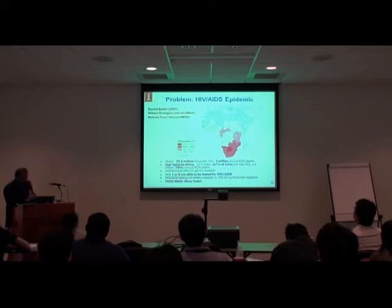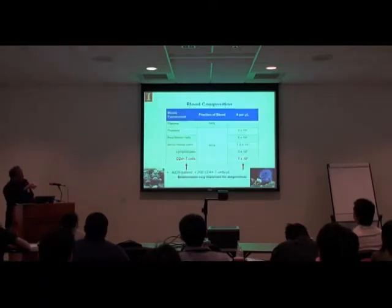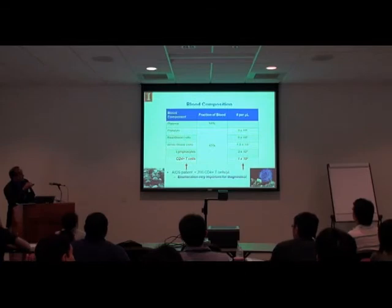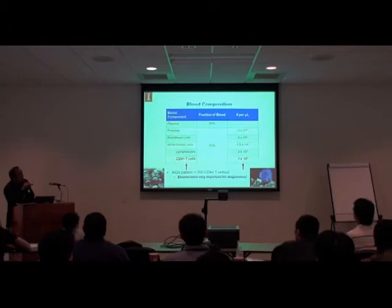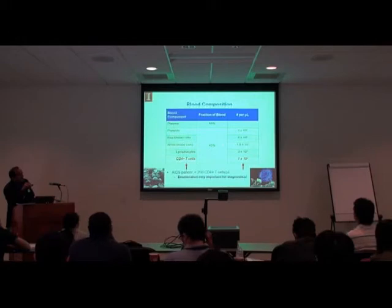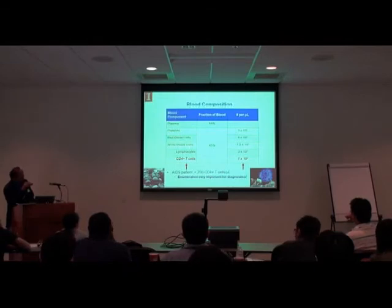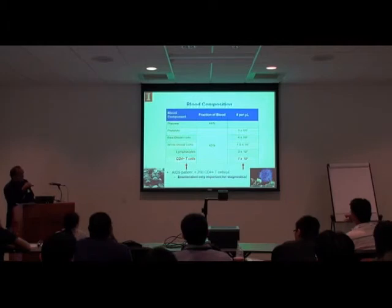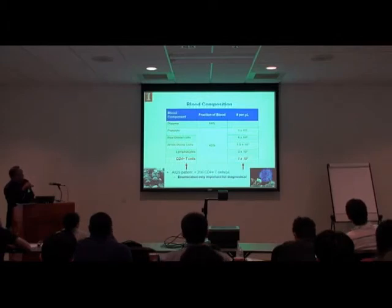This is a collaboration with Professor Bill Rodriguez, a physician in our med school. If you look at blood: blood has 5% plasma, then per microliter you have about 10 to the 5 platelets, 10 to the 6 red blood cells, and about 7 times 10 to the 3 white blood cells. Within the white blood cells you have the CD4-positive T lymphocytes, and these are the ones you're after for an AIDS patient.